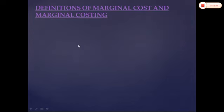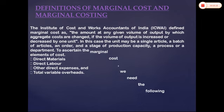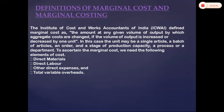Now we will move towards the definition of marginal cost and marginal costing. The Institute of Cost and Works Accountants of India (ICWAI) has defined marginal cost as: the amount at a given volume of output by which aggregate costs are changed if the volume of output is increased or decreased by one unit. The unit may be a single article, a batch of articles, an order, a stage of production capacity, a process, or a department. To ascertain the marginal cost, you need: direct material, direct labor, other direct expenses, and total variable overheads.